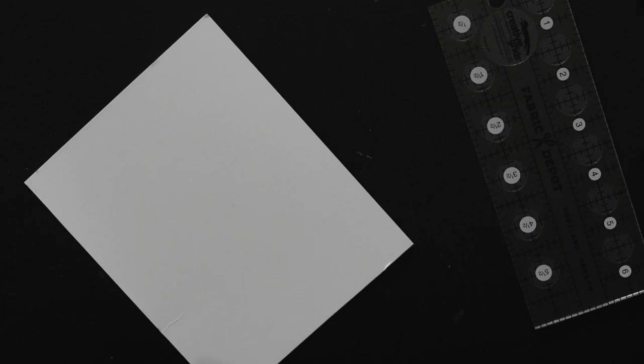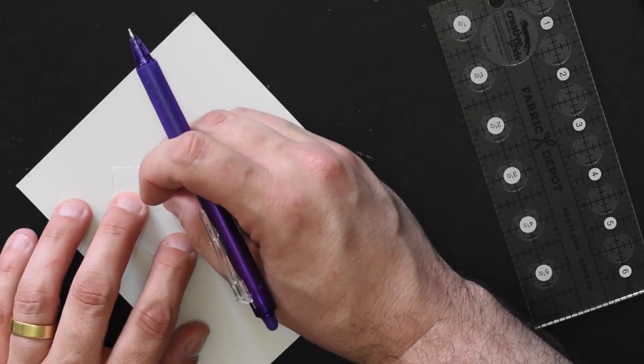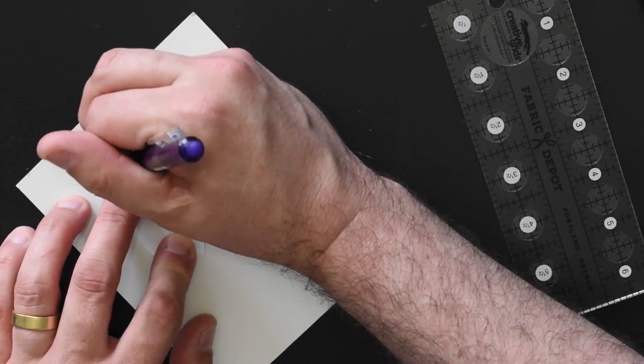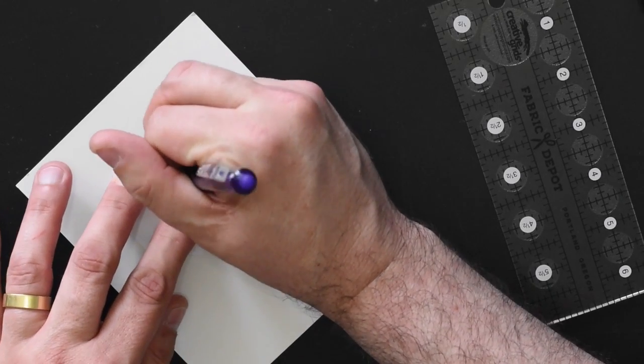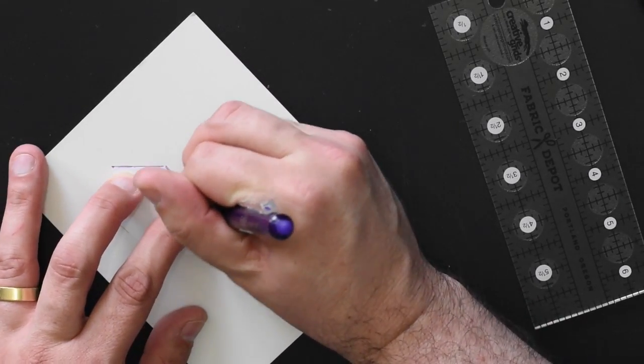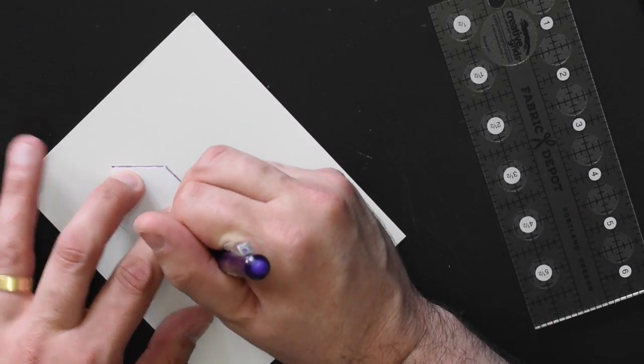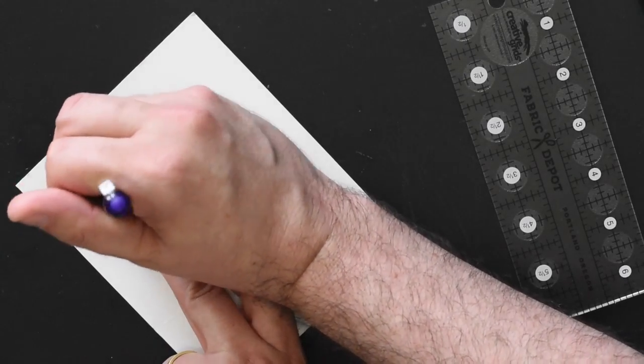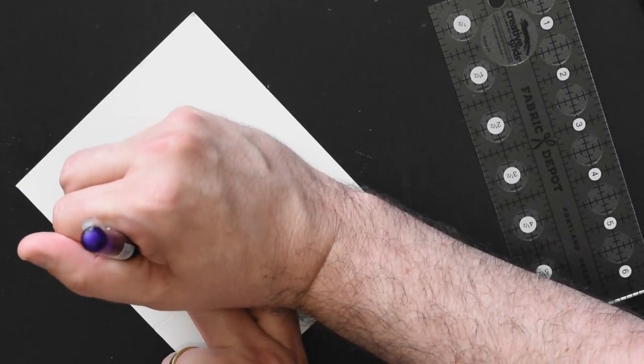The first thing that you're going to do is cut or trace around the original shape onto the cardstock. If you do it on the non-shiny side, it's better because it will draw better, and this doesn't have to be perfect.